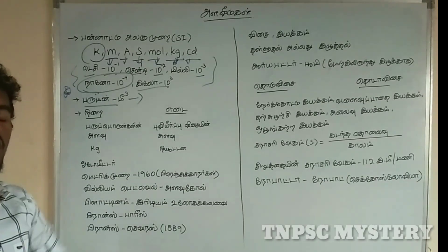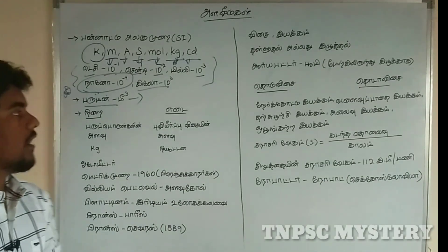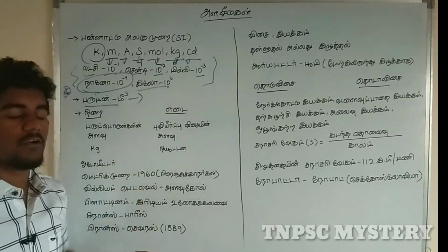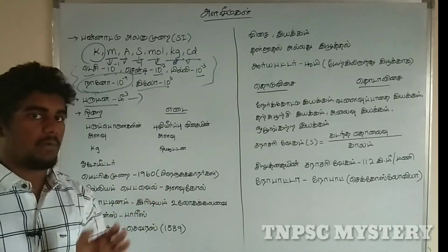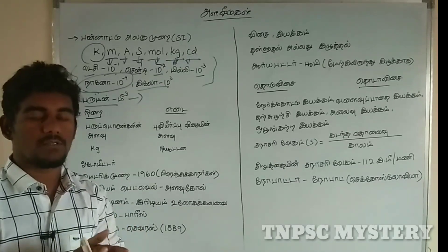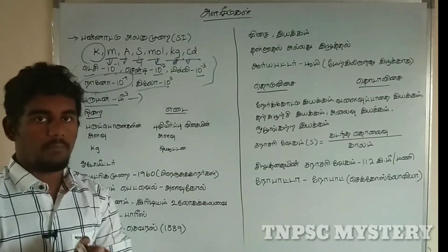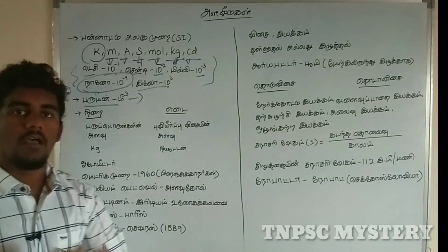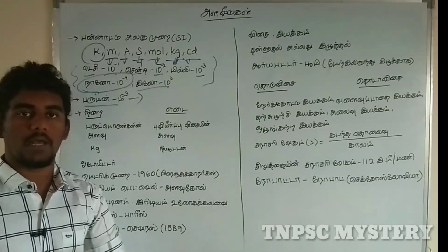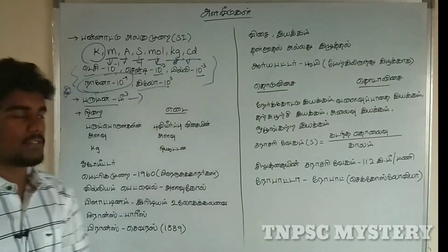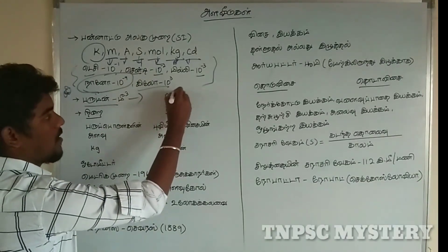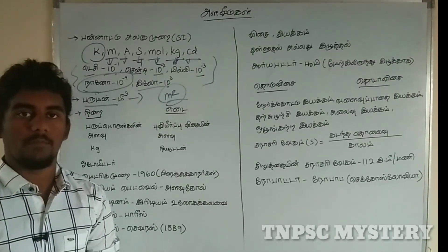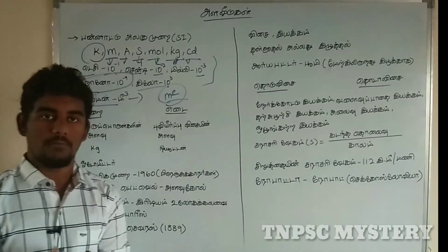Nanometer is equal to 10 power minus 9 meter. So what do we do about Baruman? We do a topic about Baruman. The right power is equal to 10 power minus 6 meter, and 1 meter is equal to 1 meter.